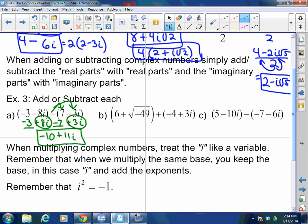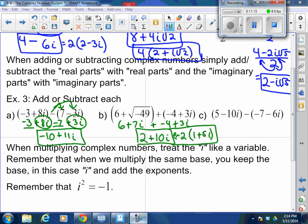Sometimes they give it to you where they want you to convert first. So this is going to become 6 plus 7i plus negative 4 plus 3i. So 6 minus 4 is 2 plus 7i plus 3i is 10i. Or you could factor that out. So it's 2 times 1 plus 5i. I appreciate y'all's enthusiasm. That's great. For C, same thing. Let's go ahead.